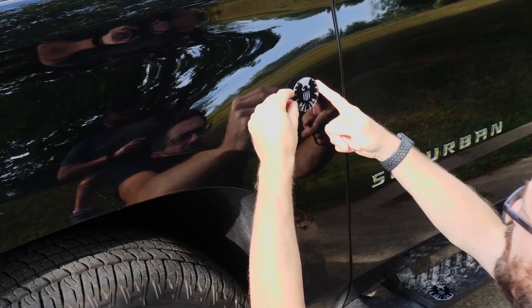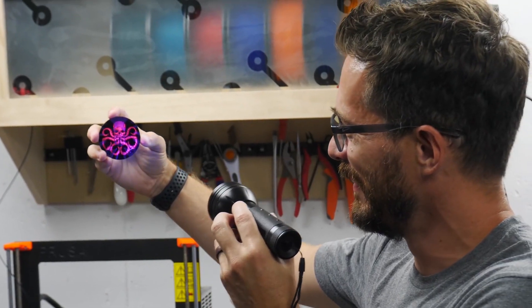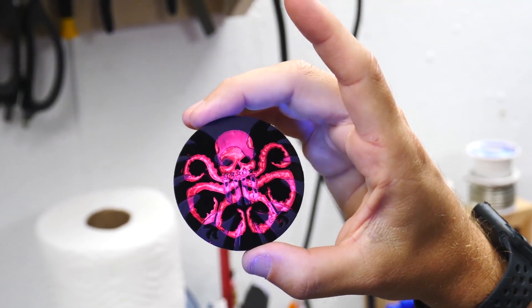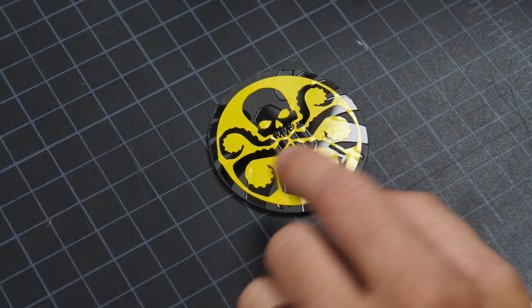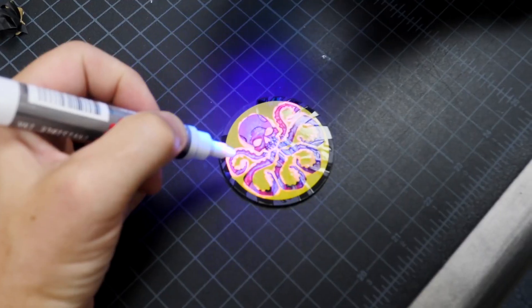Bob Clagett at I Like To Make Stuff made a laser-cut custom car badge with the SHIELD logo from the Avengers movies. The badge has a special hidden feature: a secret Hydra logo drawn in UV reflective ink. The Hydra logo is invisible until you shine a UV light on the badge. Super cool effect, gives me some fun ideas for Halloween.